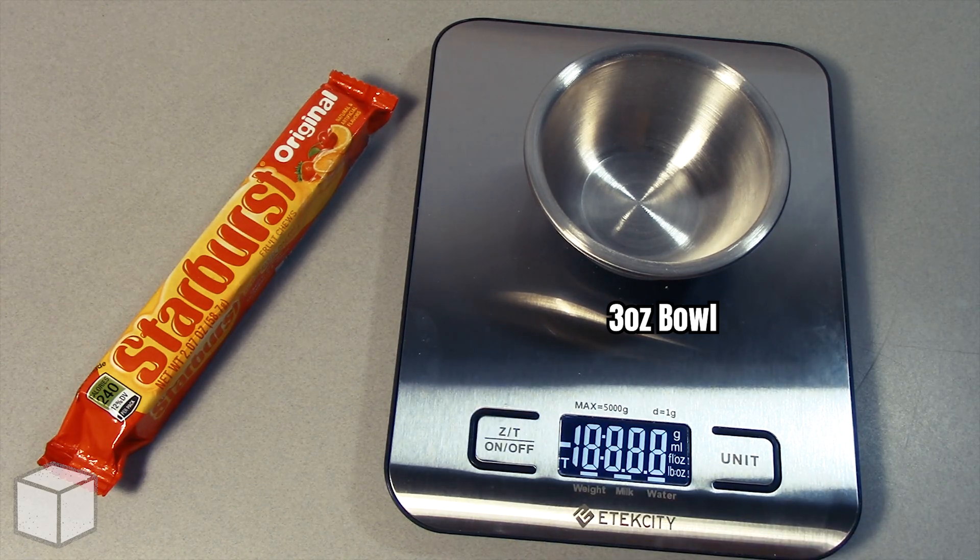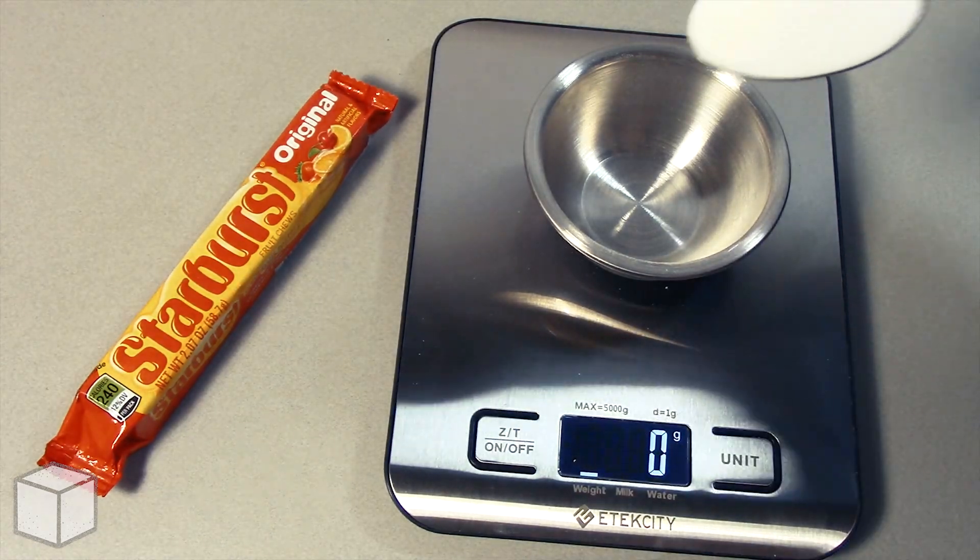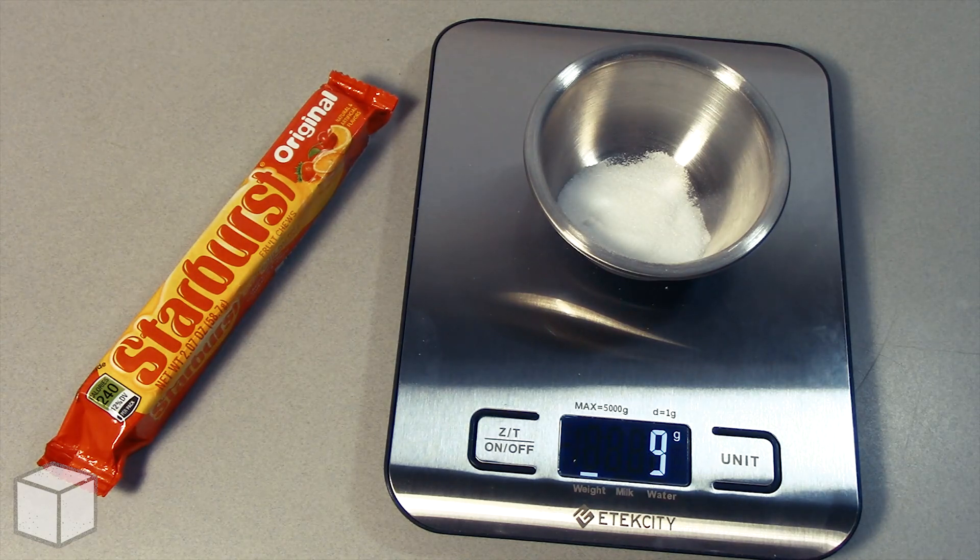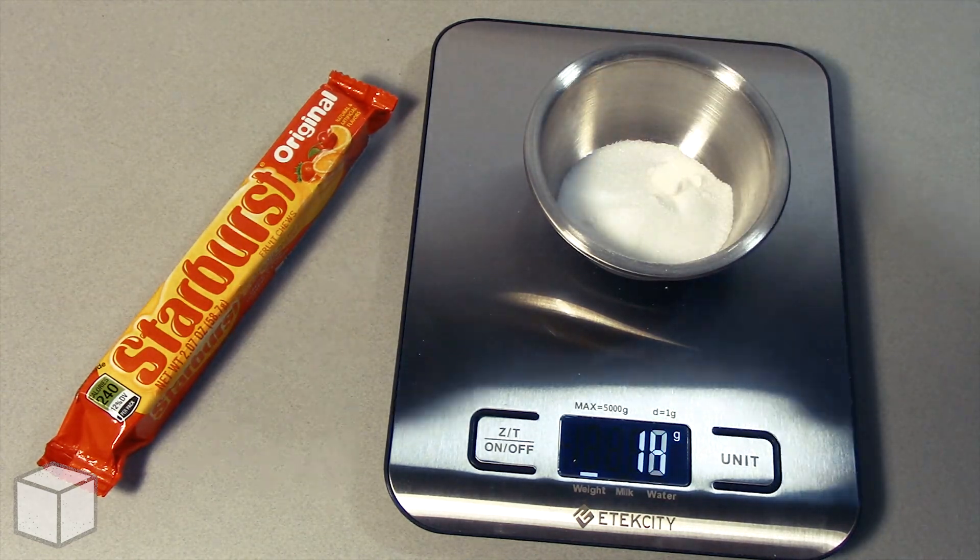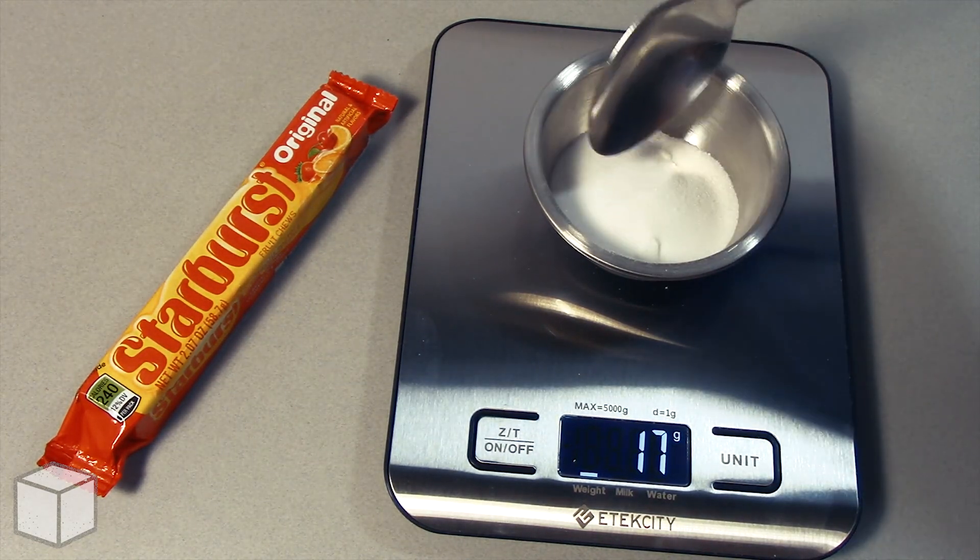And now to give a visual of what that looks like on a food scale, I'm going to add granulated sugar into this small three ounce bowl until the total amount is equal to 33 grams.